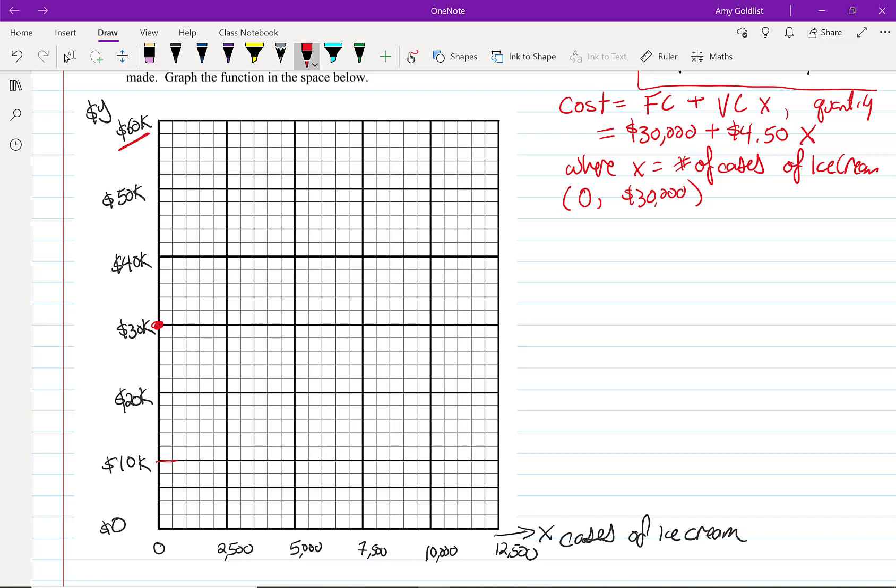I've chosen 5,000 because that seems to be a nice, easy number. Then y, or the cost, equals $30,000 plus $4.50 times 5,000. And when I run that into a calculator, I get the point 5,000, $52,500.